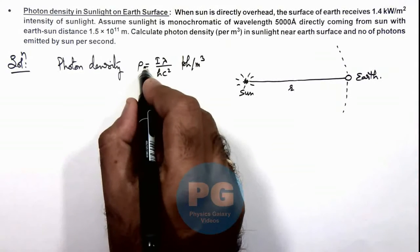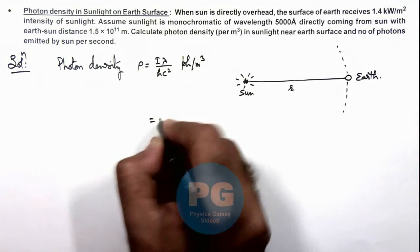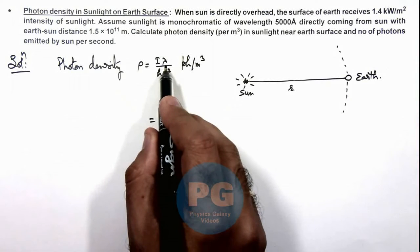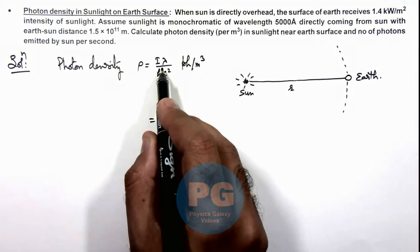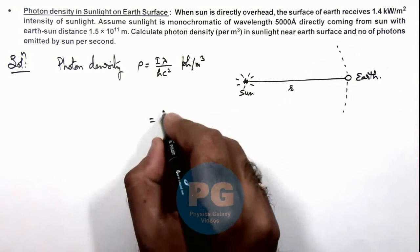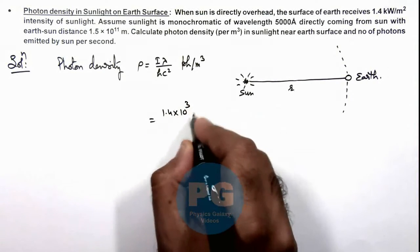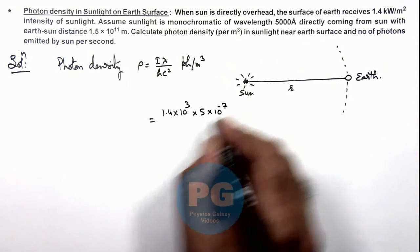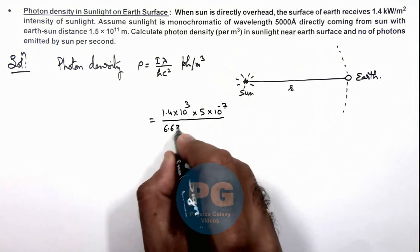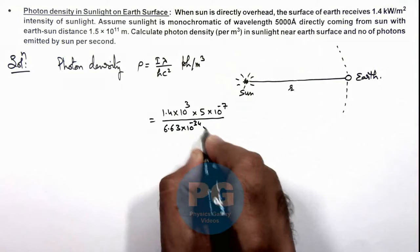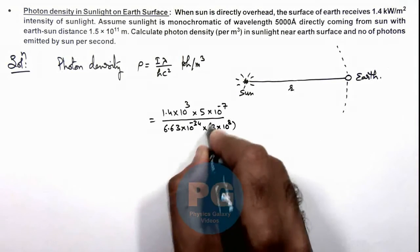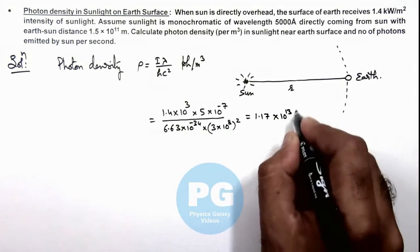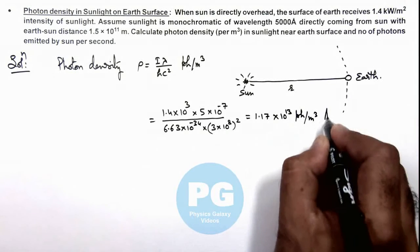Here, if photon density is this, we can simply calculate the numerical value. The intensity of sunlight is given as 1.4 kilowatts per meter square, which is 1.4 × 10³, multiplied by the wavelength 5000 angstroms = 5 × 10⁻⁷, divided by h = 6.63 × 10⁻³⁴ multiplied by (3 × 10⁸)². On simplifying, this gives us 1.7 × 10¹³ photons per meter cube — that is the result of the photon density.